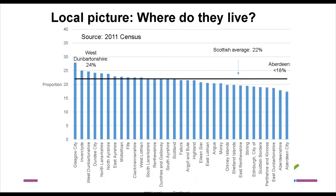The local picture: it's useful to highlight the distribution across Scotland. Geography matters. As with lone parents, families where someone has a disability are more likely to be concentrated in older industrial parts of Scotland — places like Glasgow, Inverclyde, West Dunbartonshire, Dundee, and Lanarkshire — and less likely to be found in places like Aberdeen City and Shire and East Dunbartonshire.